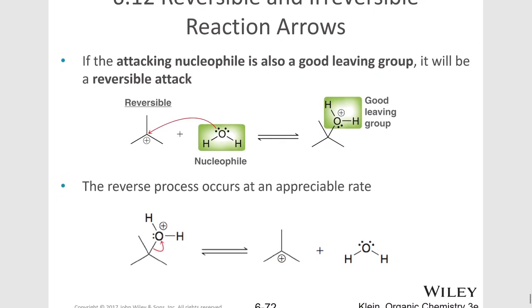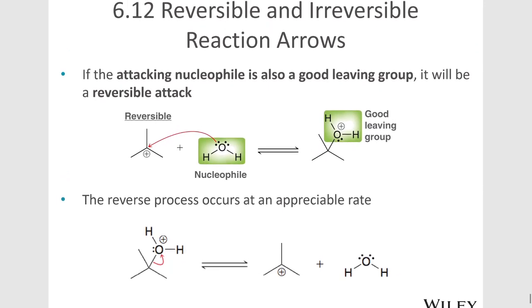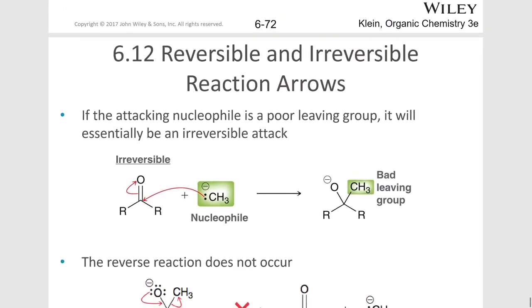If the attacking nucleophile is a good leaving group, then generally that's going to be a reversible attack. The nucleophile that's attacking here is water, which is very stable on its own, making it a good leaving group. So this process can be reversed so that water can leave, taking the two electrons in the bond with it, and that makes that a reversible reaction.